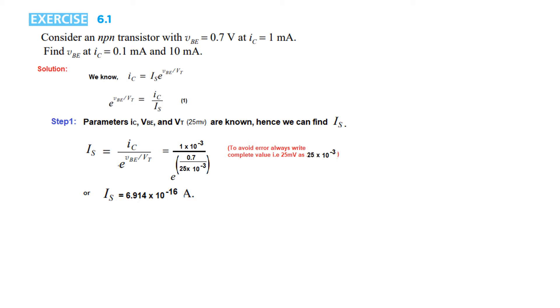Step number 2: We take log of both sides because we have to find VBE. From this equation we take log, so the left side e will get eliminated and the right side will be ln(IC/IS). From here we can write VBE = VT ln(IC/IS).